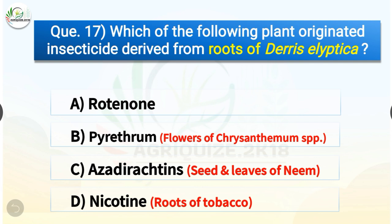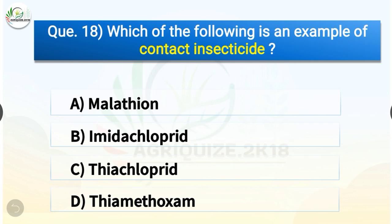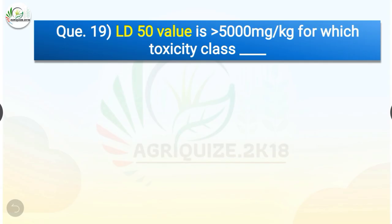Question number seventeen: which plant-originated insecticide is derived from the roots of Derris elliptica? Options are rotenone, pyrethrum, azadirachtins, or nicotine. The correct answer is option A, rotenone. Pyrethrum is derived from flowers of Chrysanthemum species, azadirachtins are derived from seeds and leaves of neem, and nicotine is derived from roots of tobacco. Question number eighteen: which is an example of contact insecticide? Options are malathion, imidacloprid, thiacloprid, or thiamethoxam. The correct answer is option A, malathion.